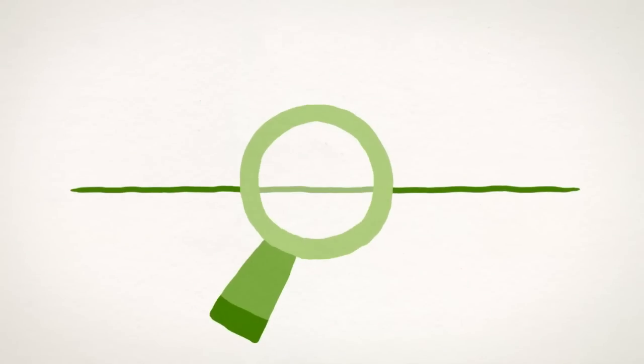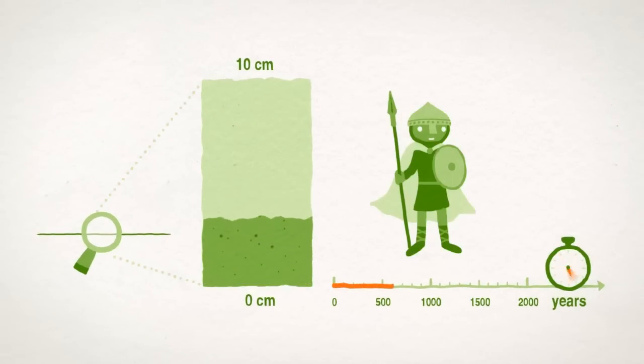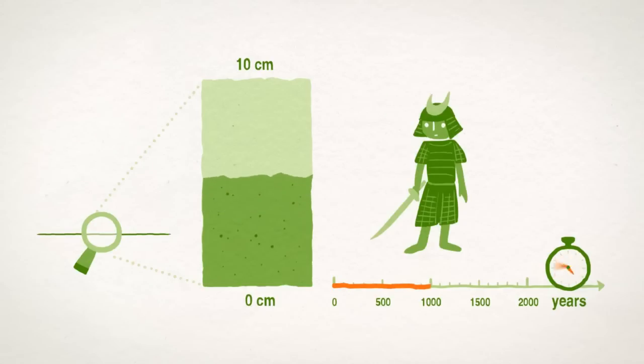But why does all of this matter so much? Well, because it takes 2,000 years to generate about 10 centimeters of topsoil. That is a long time.